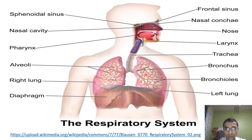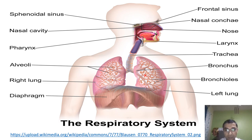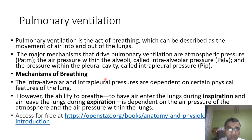The trachea subdivides into bronchi, and then the bronchi subdivide into bronchioles. Ultimately each bronchiole leads to the alveoli. The alveolus is the functional unit of the lungs. If you imagine a bunch of grapes and pick a single grape, that single grape represents one alveolus — and it is here that all gas exchange occurs. There is the right lung and the left lung.